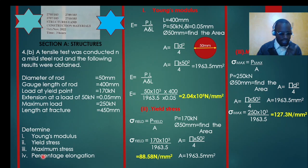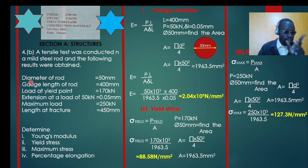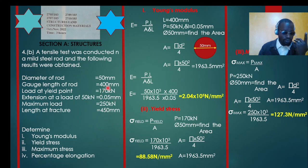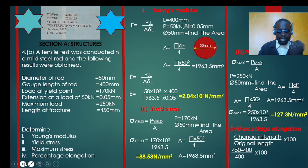Finally, we calculate percentage elongation using the formula: percentage elongation = (change in length / original length) × 100. The length at fracture is 450 mm and the original gauge length is 400 mm. The change in length = 450 − 400 = 50 mm. Therefore, percentage elongation = (50 / 400) × 100 = 12.5%.